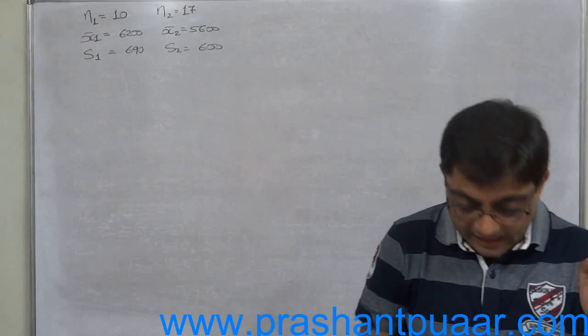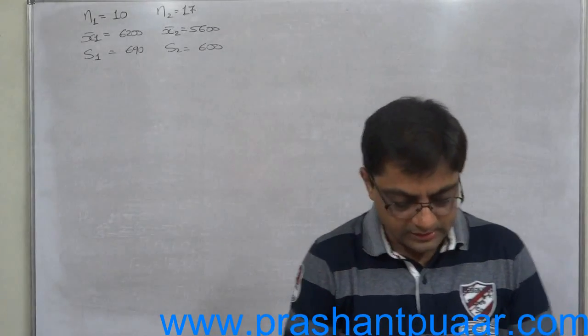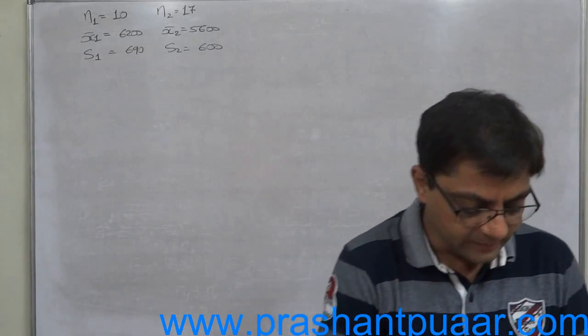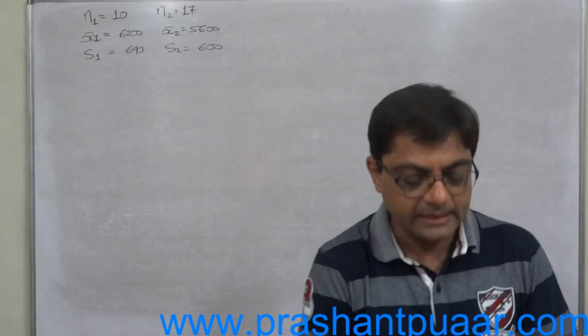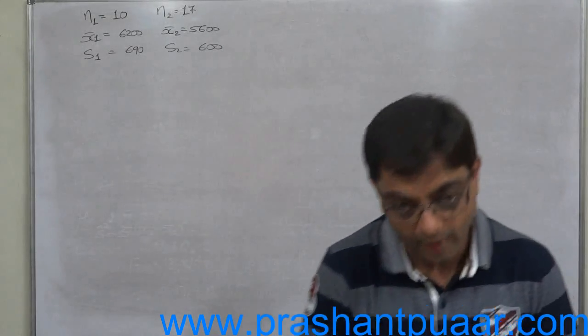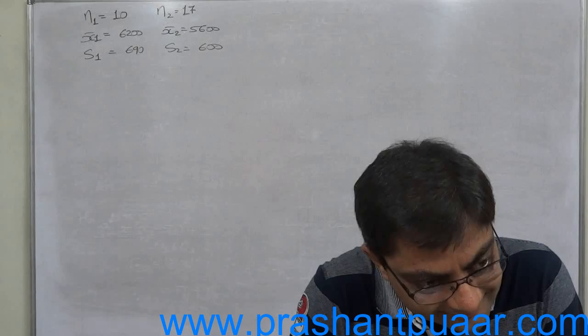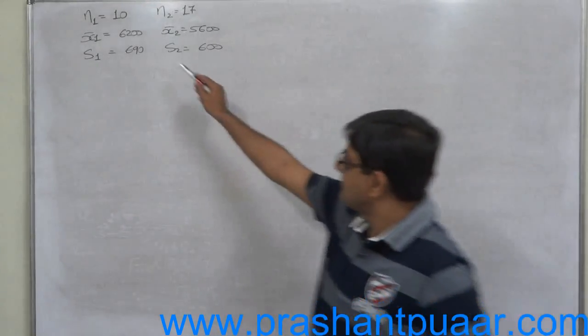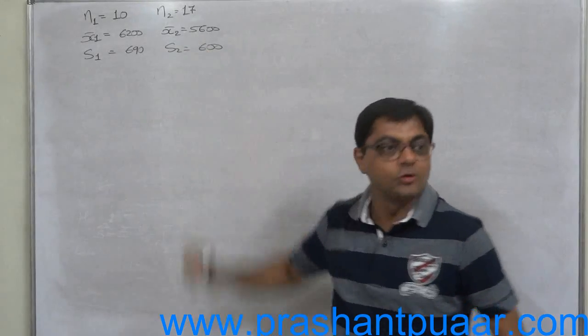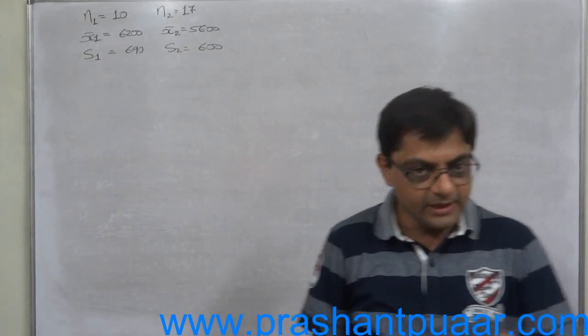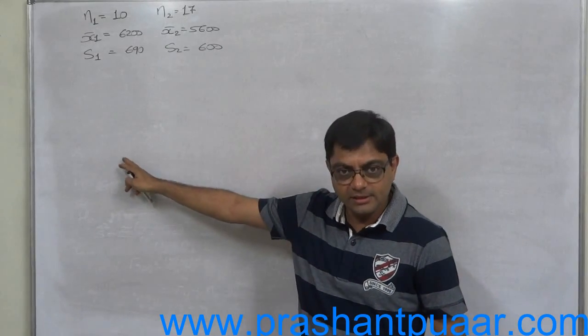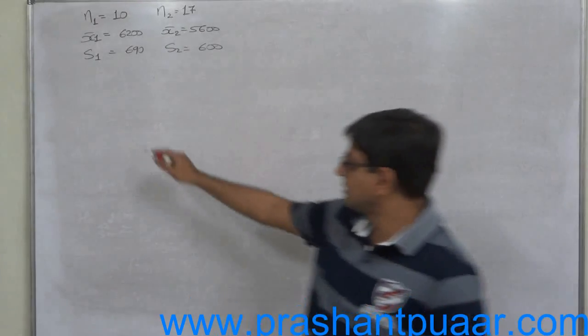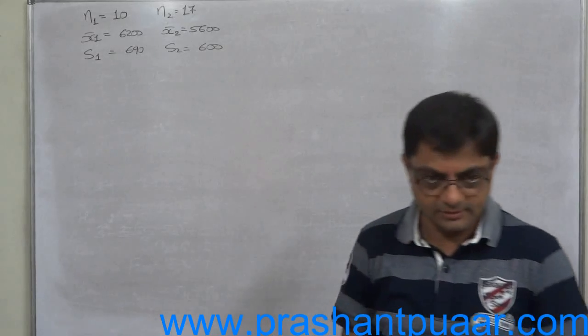But carefully read the words in the beginning of the question: of the two salesmen X claims that he has made larger sales than Y. That means this is the case of one-tailed test. Average sales of X is greater than the average sales of Y. That we have to consider at the time of writing or determining the alternative hypothesis.